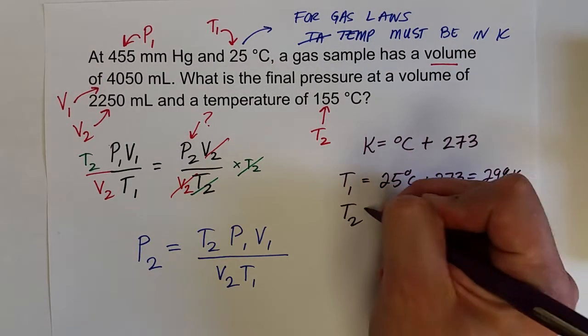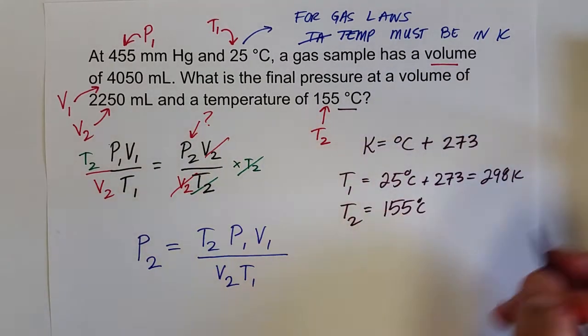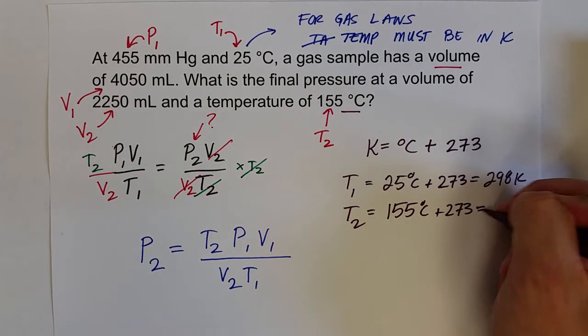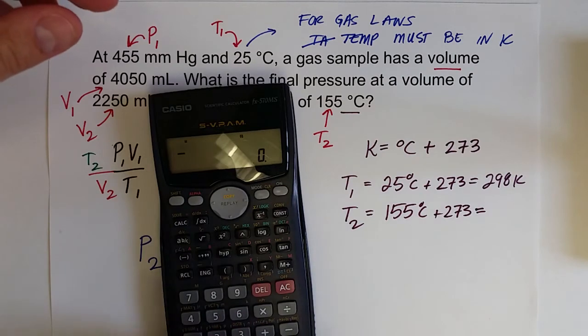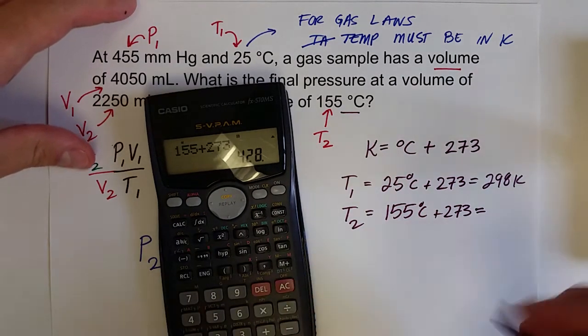T2 was 155 degrees Celsius. And adding 273 to that equals, well, I better break out my calculator. 155 plus 273 equals 428.